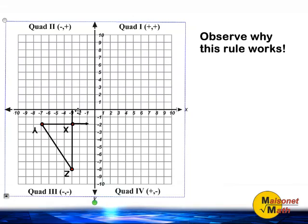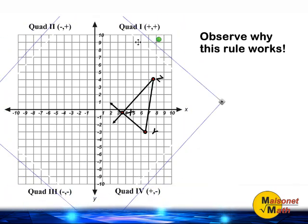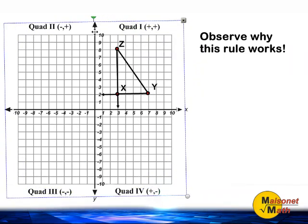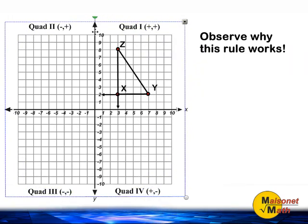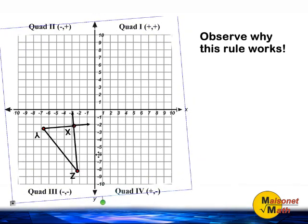And take a look at the arrow that is pointing to the Y value. Before we rotated our triangle, it was pointing to positive 2. If we rotate it 180 degrees, that same arrow is still pointing to the number 2, but it becomes an opposite integer, or in this case, negative 2.